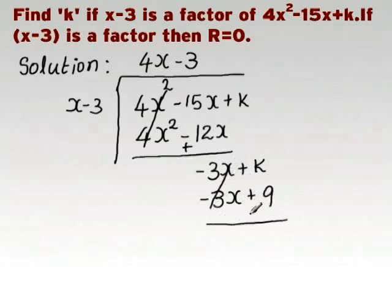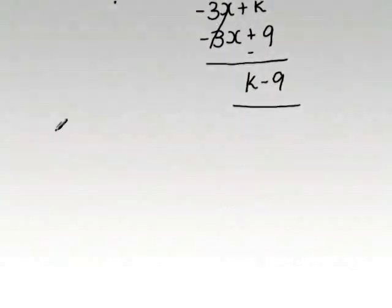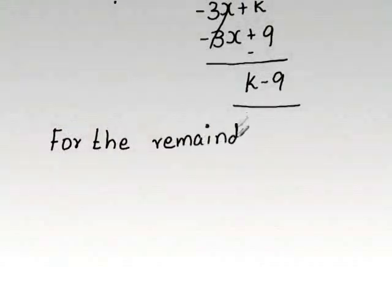Now, we get k minus 9 as the remainder. It is given that x minus 3 is a factor. That means x minus 3 divides the given expression without any remainder. So, remainder is 0.